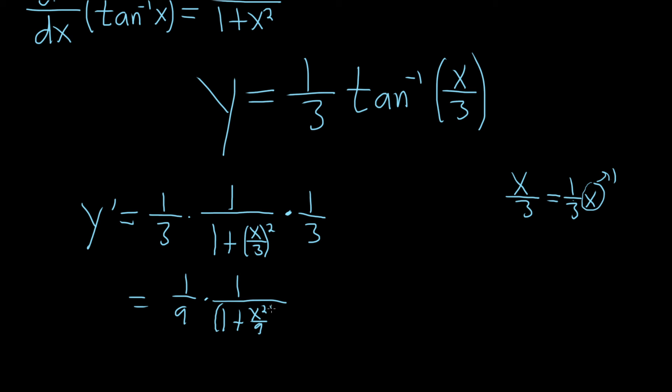This piece here on the bottom is really in parentheses, so you can distribute the 9 on the bottom. So 1 times 1 is 1. 9 times 1 is 9. And then when you multiply the 9 by x squared over 9, the 9s cancel, so you just get x squared.